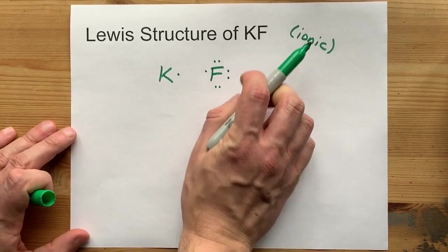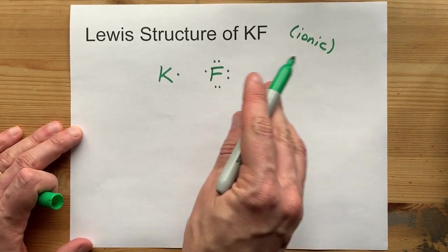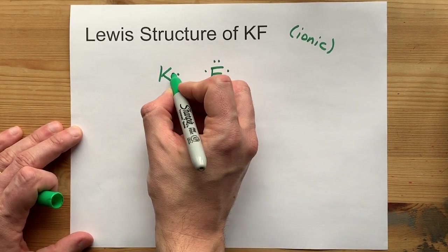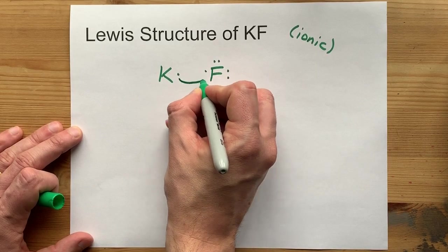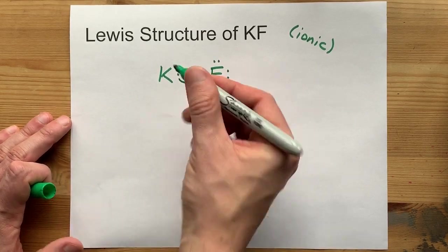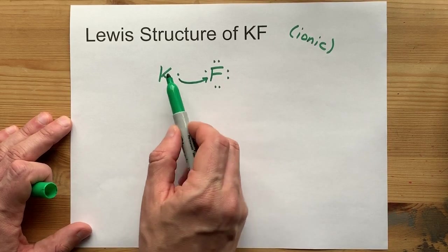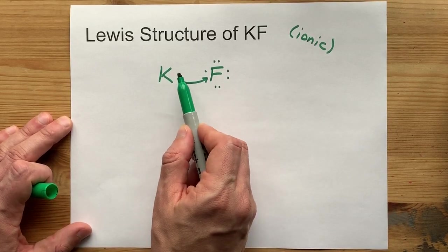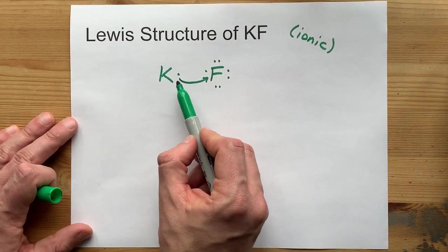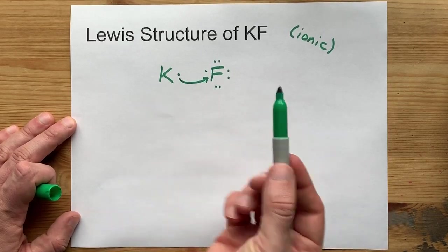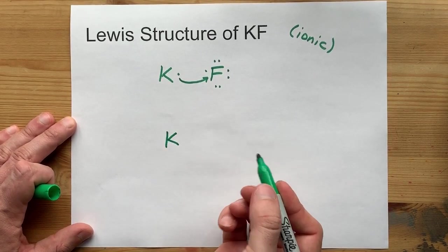Now, because it's an ionic bond, there needs to be a transfer of electrons. Potassium, the metal, will give its electrons away to the non-metal until everything's stable. The potassium only has one extra electron in its outer shell, so it gives it away and becomes stable by having an empty outer shell.